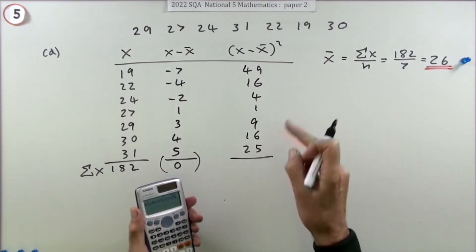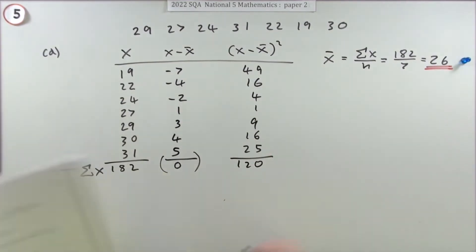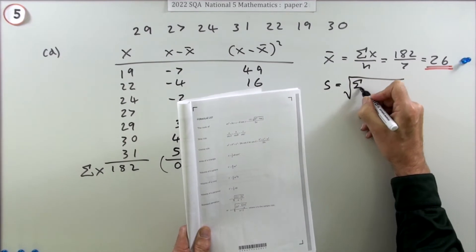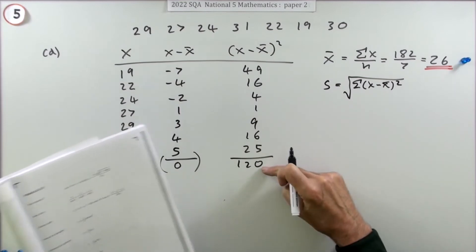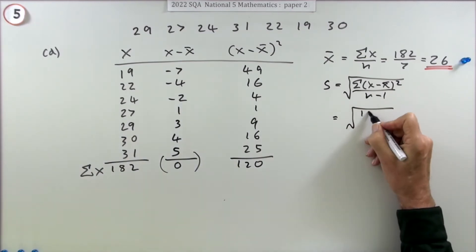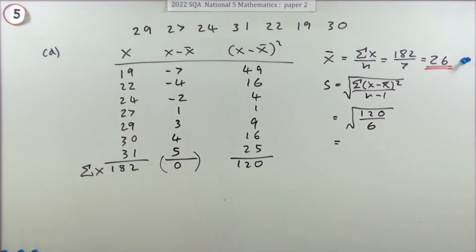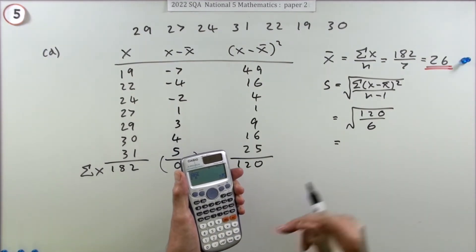Add up the squared differences - that's sigma (x minus x̄)² - to get 120. The standard deviation formula is the square root of that sum divided by n minus one. So that's the square root of 120 divided by 6.